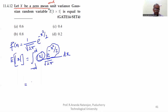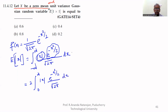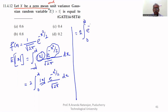Therefore, this can be written as 2 times the integral from 0 to infinity of modulus of x times e to the power of minus x squared over 2, divided by square root of 2 pi, dx. Since we only have positive values, modulus of x can be replaced by x. So that equals 2 times the integral from 0 to infinity of x times e to the power of minus x squared over 2, divided by square root of 2 pi, dx.